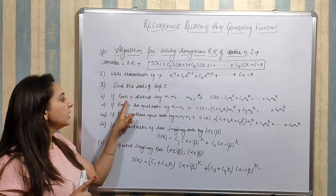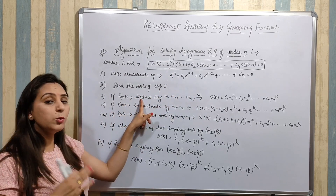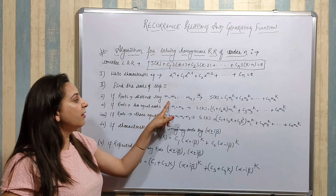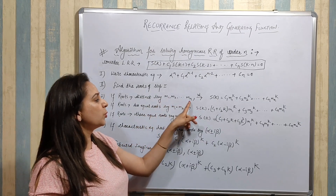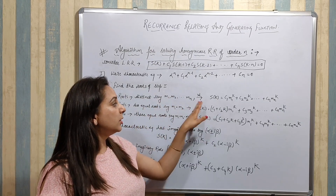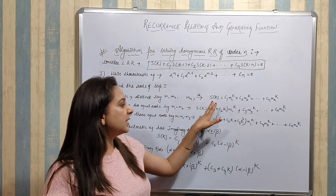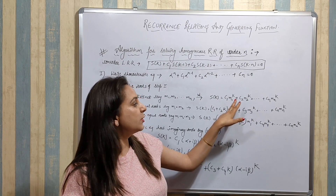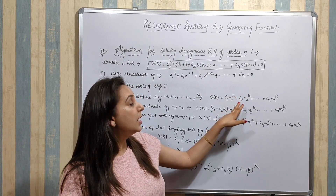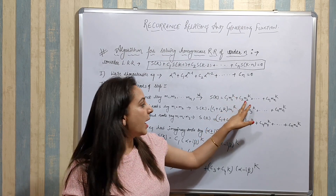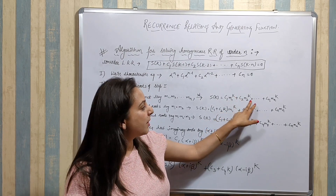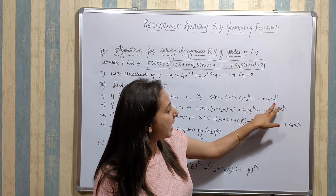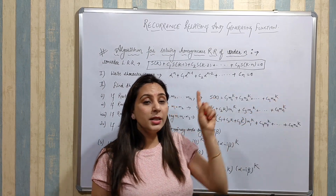Next, find the roots of the characteristic equation. If the roots are distinct — say M1, M2, ..., MN — then the solution is: S(K) = C1·M1^K + C2·M2^K + ... + Cn·MN^K.